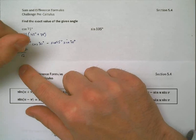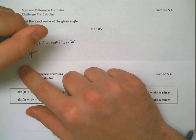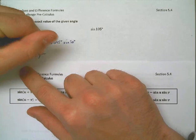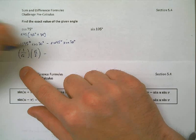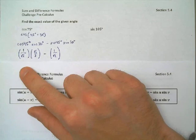I know that the cosine of 30 degrees is the square root of 3 over 2, minus the sine of 45 degrees is 1 over the square root of 2, and the sine of 30 degrees is 1 half.